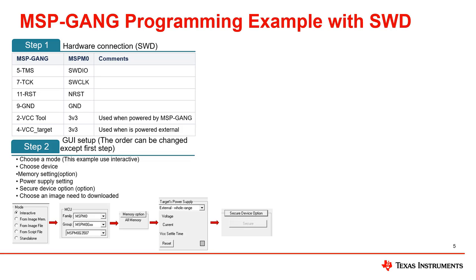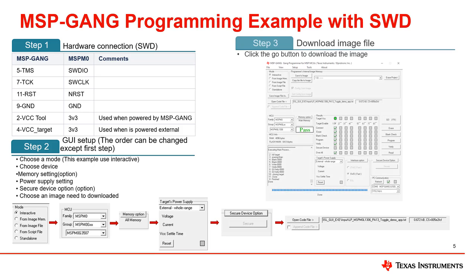Then configure the security option, which is the configuration of non-main flash — here select default. Select the image file you want to burn. The third step is to flash the file: select the channel you want to program and then click the Go button to finish programming.